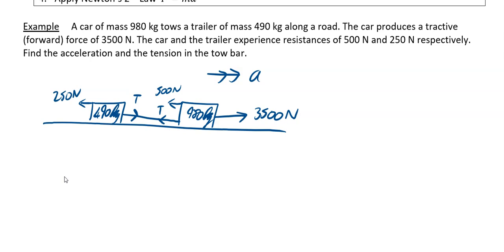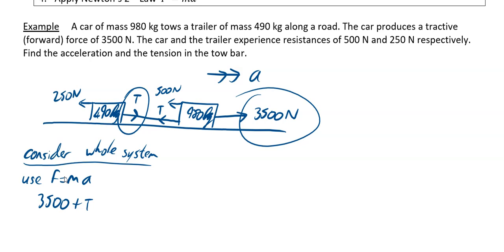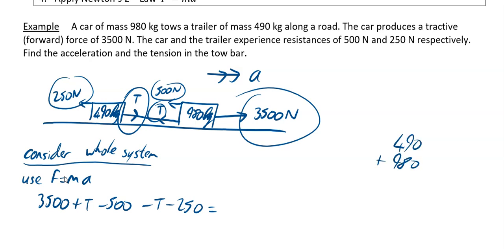To find the acceleration, consider the whole system — the car and the trailer — and use F = ma. The forward force is 3500 N. The tensions cancel each other out. Going backwards we have 500 N and 250 N resistance. The total mass is 490 + 980 = 1470 kg. So 3500 − 500 − 250 = 2750 = 1470a, giving acceleration a = 2750 ÷ 1470 = 1.87 m/s².